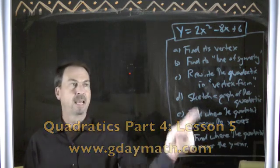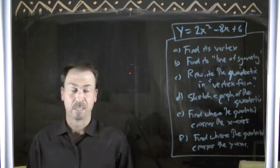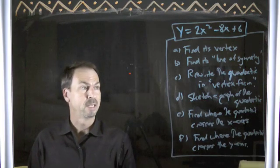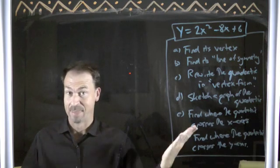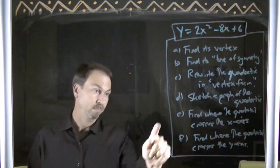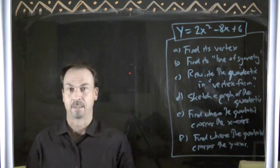But the questions being asked are: a, find its vertex; b, find the line of symmetry. I've never used the word line of symmetry, I have no idea what that means. c, rewrite the quadratic in vertex form. Whatever that means. d, sketch the graph of the quadratic. e, find where the quadratic crosses the x-axis. f, find where the quadratic crosses the y-axis.